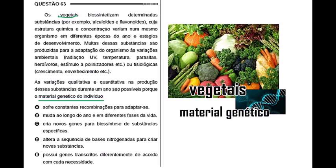Many of these substances are produced for the organism's adaptation to environmental variations — including UV radiation, temperature, parasites, herbivores, stimuli, pollinators, etc. — or physiological ones, such as aging and growth.